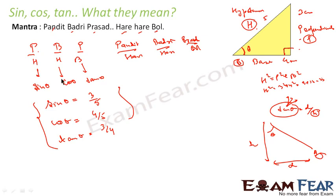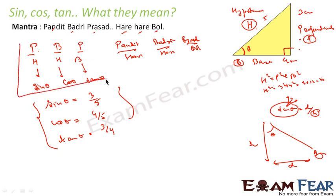Using this mantra — Pandit, Badri, Prashad, Hari, Hari, Mool — sin theta equals P by H, cos theta equals B by H, and tan theta equals P by B. This is something we have to learn, and to learn this, we have this mantra.